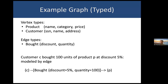Let me jump in directly with an example graph in which we have typed data. TigerGraph has pioneered the concept of typed graphs in which you have, for example, a type of product nodes that have name, category and price information — these would be the properties — as well as customer nodes who have a social security number, a name and address. These are connected by edges of type "bought", which model the relationship between a customer and the product. Such a bought edge carries information itself, such as the discount at which this customer bought this product and the quantity of product items.